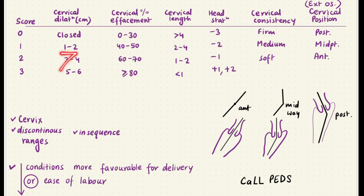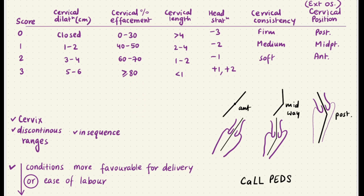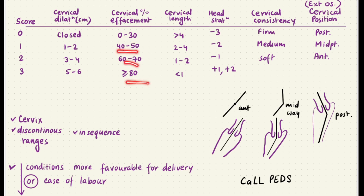Cervical dilatation will always be in centimeters — you say one finger, two finger width — and you basically just go one, two, three, four, five, six. Next is cervical effacement, which starts with 30. To remember that it starts with 30: think of 'C' — two C's, like the word cervical has two C's — like two reverse C's. So zero to 30, then 40-50, 60-70, and greater than or equal to 80 — discontinuous ranges, all in sequence.